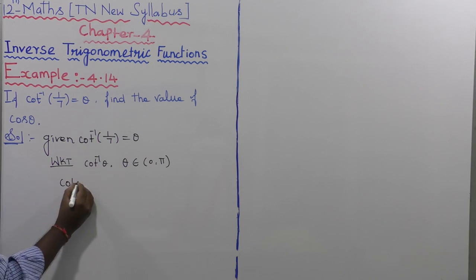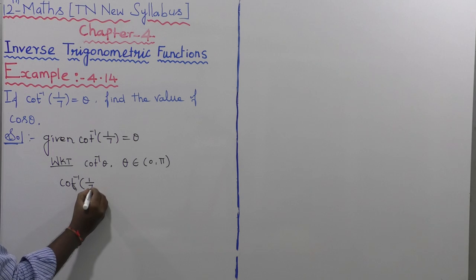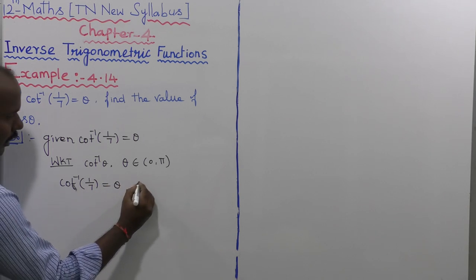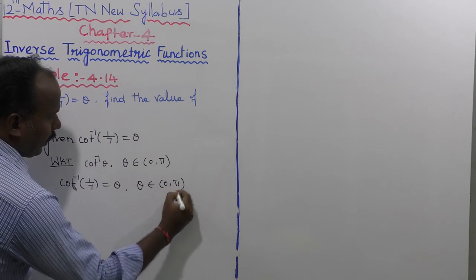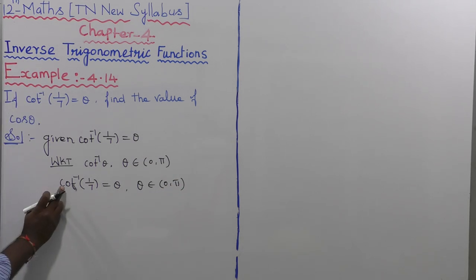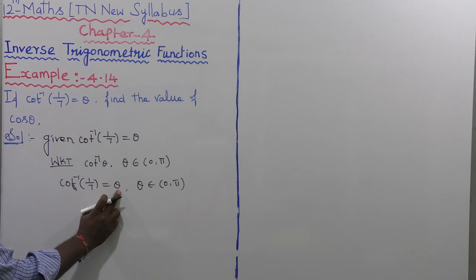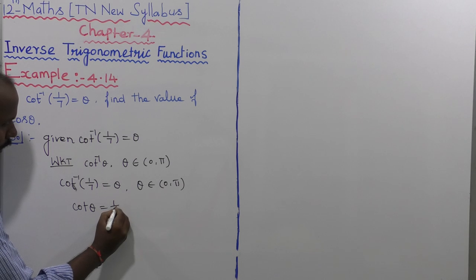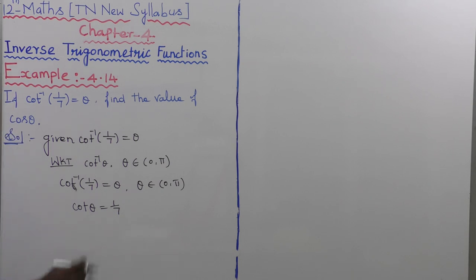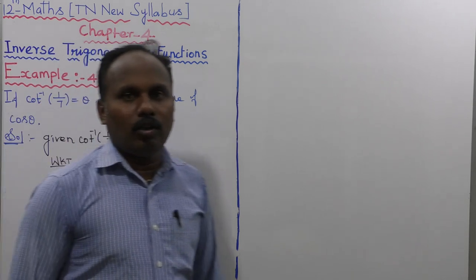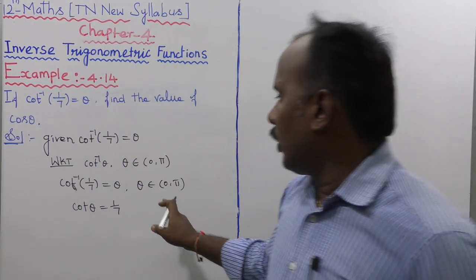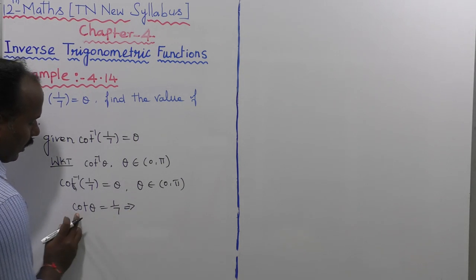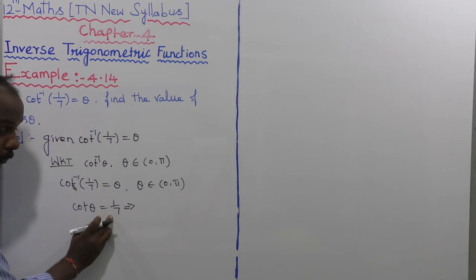So cot inverse of 1 by 7 is equal to theta, and theta belongs to 0 comma pi. Moving cot inverse to the right side, cot theta is equal to 1 by 7. This is because theta exists for the limit 0 comma pi, meaning theta is an acute angle value.